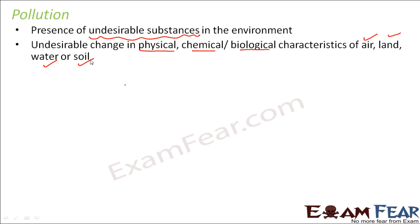Depending on where these undesirable substances are present, we categorize pollution into various types. If harmful substances are present in the air, we call it air pollution; if in water, water pollution; if in soil, soil pollution. These substances can change the physical and chemical properties of air, making the entire air harmful.